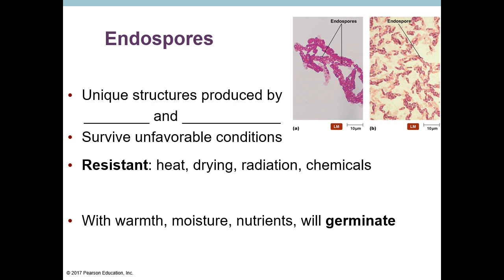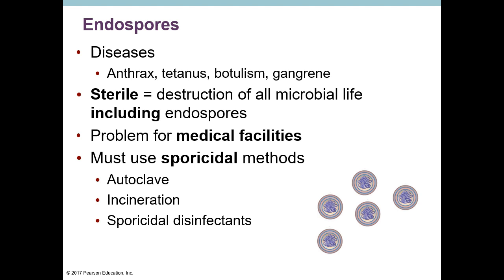Endospore-forming bacteria are very hard to kill. Even bleach may not eliminate them if conditions become favorable again — bacteria can go dormant through the bleach exposure and resume growth once it's gone. The Clostridium genus contains bacteria that cause many serious diseases including tetanus, botulism, and gangrene. In the Bacillus genus, Bacillus anthracis causes anthrax. These are deadly diseases and very difficult to eliminate.